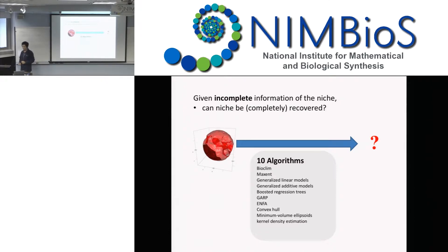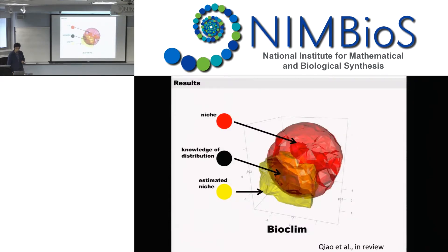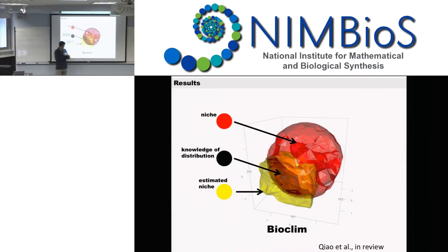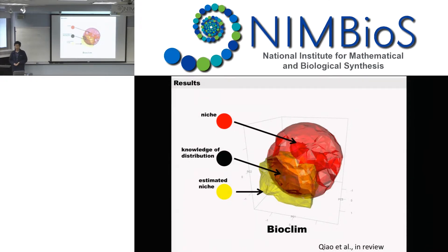We include ten algorithms, but I will only show you the result of MaxEnt. The first result I want to show is the prediction of BioClim. The red area is the previously defined fundamental niche, and the darker area is the portion of the niche we use to train the model, and the yellow part is the prediction. It's kind of obvious that this estimated niche is an underestimate of the fundamental niche.